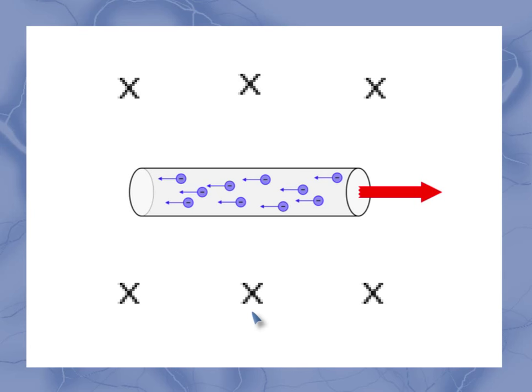So let's take our little wire here and put it into a magnetic field. And again, these x's represent the back side of a magnetic field that's pointed into the screen. So if I define my current as being to the right, then my electrons are actually negative charges moving in the negative direction to the left.